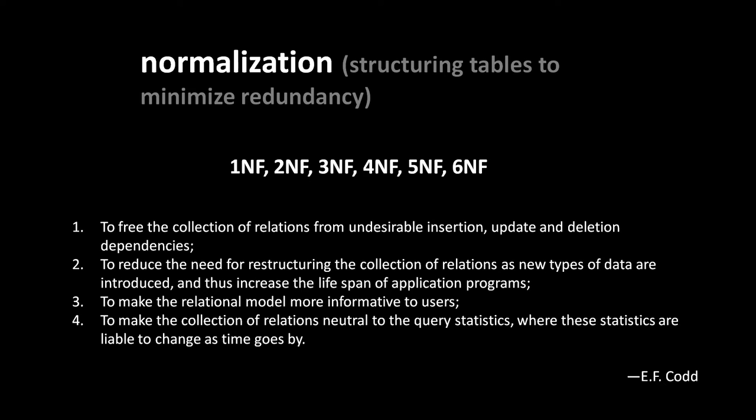The second rule: to reduce the need for restructuring the collection of relations as new types of data are introduced, and thus increase the lifespan of application programs. That's the flexibility I was talking about. The idea is that if you follow normalization rules, you should be able to add new tables, remove tables, or modify existing tables like adding new columns without having to rearrange everything else. Number three: to make the relational model more informative to users. I think that really just means the relational model is somehow more intuitive and natural — it has a more natural correspondence to the way we think about the data. That one's arguable, but maybe it's sometimes true.